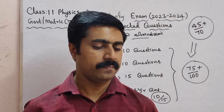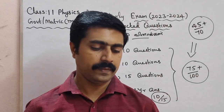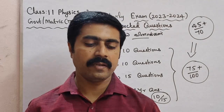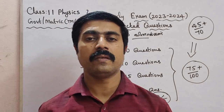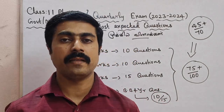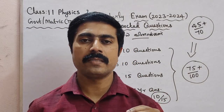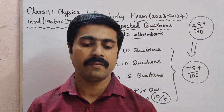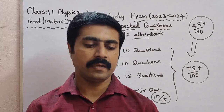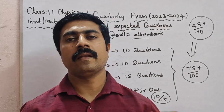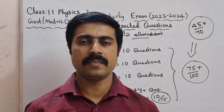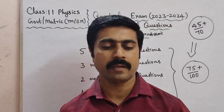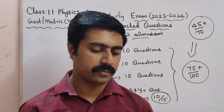5 marks — first 5-mark question: note on screw gauge, vernier caliper, and triangular radar method. From Unit 1, bookbag — small distance measuring devices: screw gauge and vernier caliper. Larger distance measuring methods: triangulation and radar method.